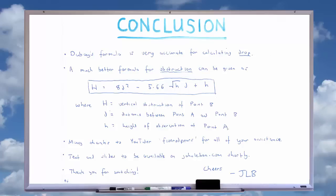However, there is a difference between drop and obstruction and some people appear to be using the drop formula when they are actually observing or measuring obstruction. It is hoped that this series has demonstrated that there is a significant difference between obstruction and drop, and the obstruction formula of large H = 8d^2 - 5.66 sqrt(h)d + h will become more popular amongst Neo Flat Earthers from this point forward.